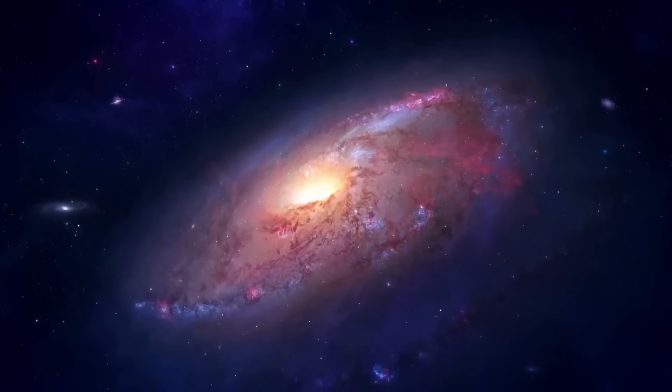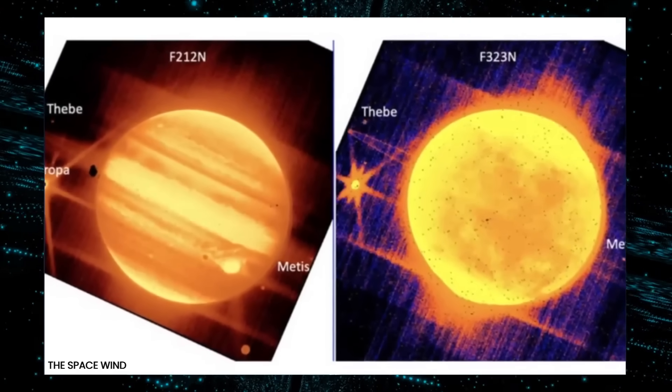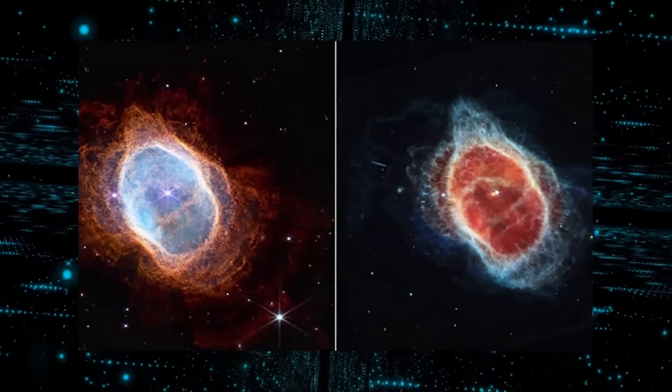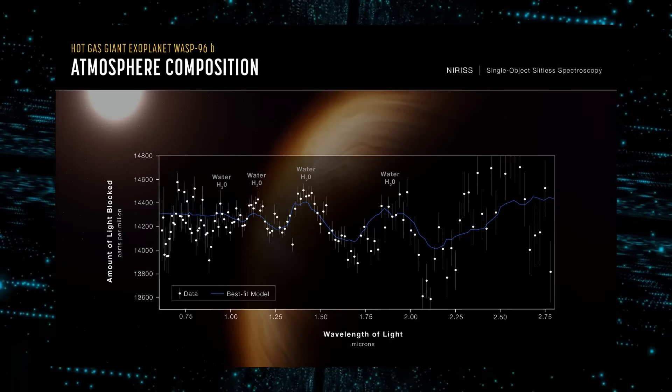The water vapor signature in the atmosphere of a hot, puffy gas giant orbiting a far-off sun-like star has been captured by JWST. It also discovered indications of clouds and haze.